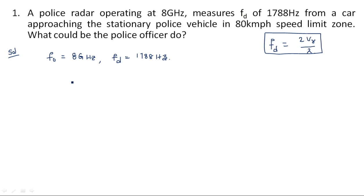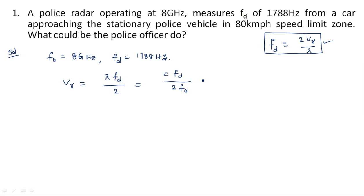We calculate the relative velocity using the Doppler formula. Rearranging: vr = (lambda · fd) / 2. Since lambda = c / f0, this becomes vr = (c · fd) / (2 · f0), where c is the velocity of light, equal to 3 × 10^8 meters per second.